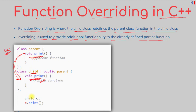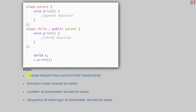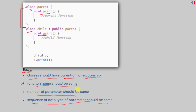There are a few rules we need to follow. First, the classes should have a parent-child relationship — the two classes must have a parent and child relationship between them. Second, the function name should be the same in both the parent and child class. Also, the number of parameters and the sequence of data types of the parameters should be the same in both the parent and child class.